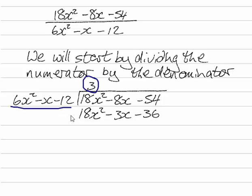So 3 times 6x squared gives me 18x squared. 3 times minus x gives me minus 3x and 3 times minus 12 will give me minus 36.